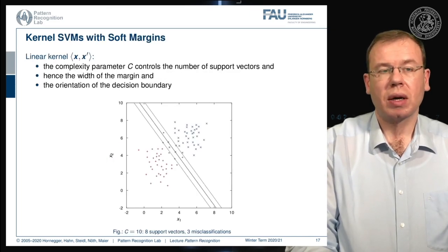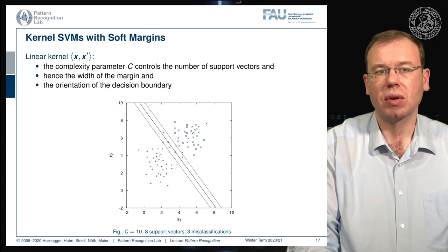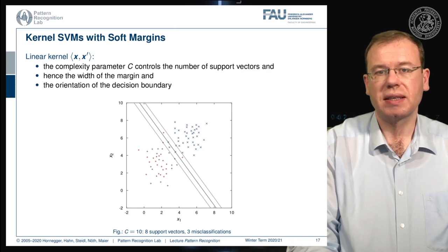Let's look back at our kernel SVM with soft margins now. This is the linear kernel here, where the complexity parameter c controls the number of support vectors, and hence the width of the margin and the orientation of the decision boundary. You can see that here.